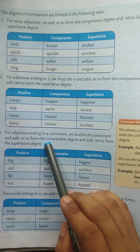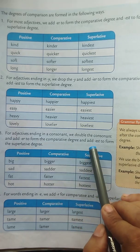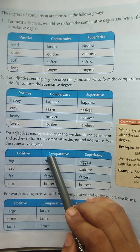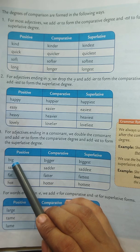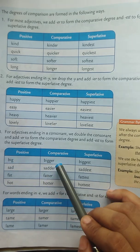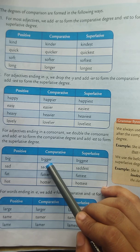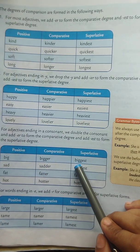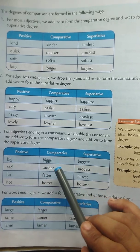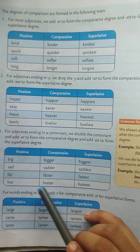For adjectives ending in a consonant, we double the consonant and add ER to form the comparative degree, and add EST to form the superlative degree. For example: big — G is a consonant, so we double it and add ER to get bigger (B-I-double-G-E-R), and double it and add EST to get biggest. Big — bigger — biggest. Sad — sadder — saddest. Fat — fatter — fattest. Hot — hotter — hottest.